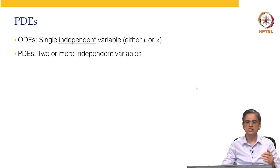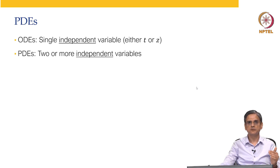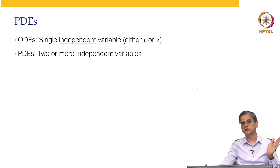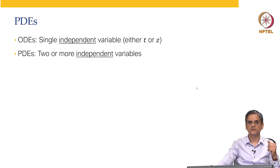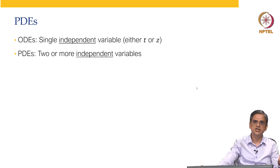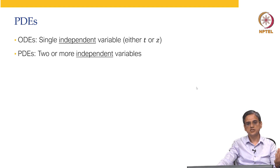Let us talk about what is the difference between ordinary differential equations and partial differential equations. Ordinary differential equations are equations where you have one single independent variable. That independent variable could be time or it could be spatial location — the spatial location could be z, or r if you are working in radial coordinates, or theta if you are working in polar coordinates. Partial differential equations are where you have two or more independent variables.